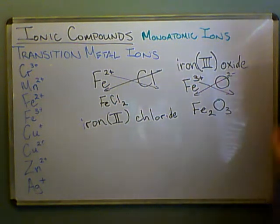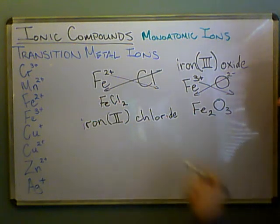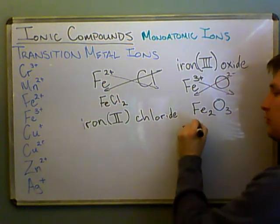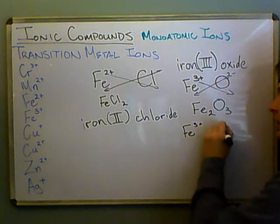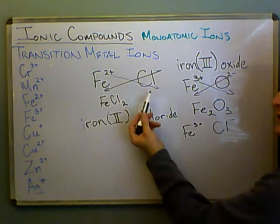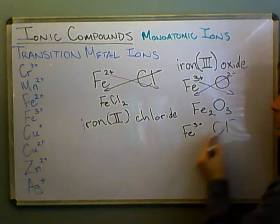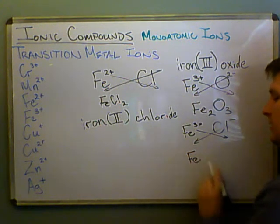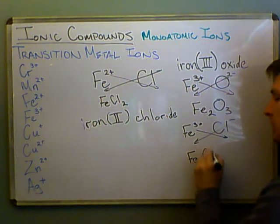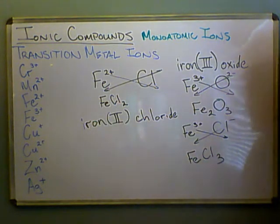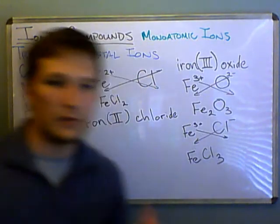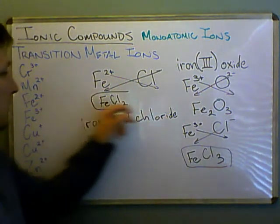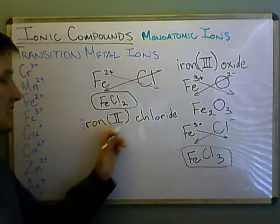So what would iron(III) chloride be? We'd have iron 3 plus and then the chloride ion just like before. This time when we switch them, we get iron with a 1 and Cl with a 3, giving FeCl₃. As you can see, these are two completely different compounds, and that's what these Roman numeral numbers are for — they help you tell the difference between one kind and another.